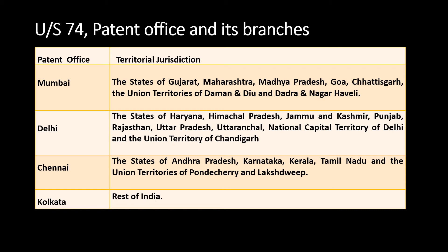As Section 74 says, each patent office has a specific jurisdiction. Here you can see the patent offices and the states from which applications can be filed in each of the four specific patent offices. For example, Kerala can only file an application in the Chennai patent office, and the Chennai patent office is the right jurisdiction for states like Karnataka and Kerala.